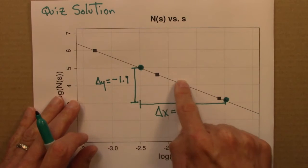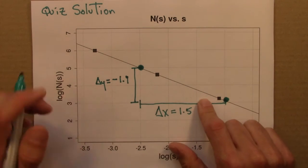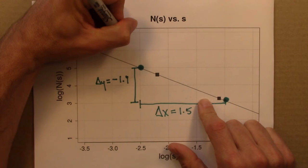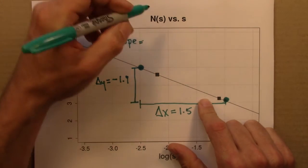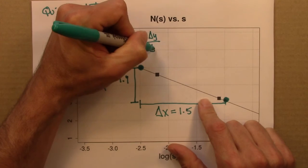And minus because it's decreasing as I go from left to right. So then the slope is delta y over delta x.